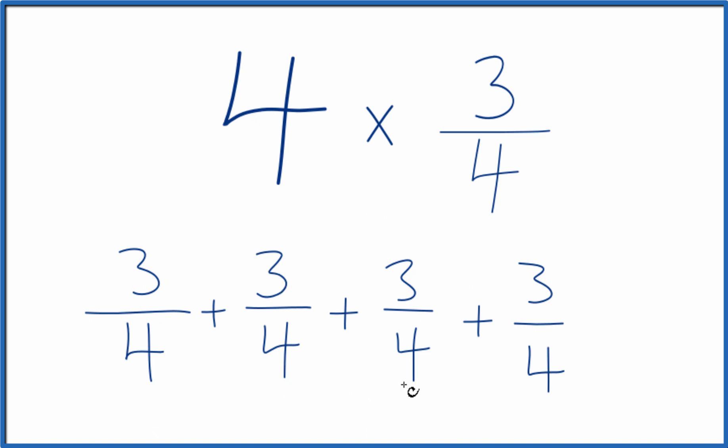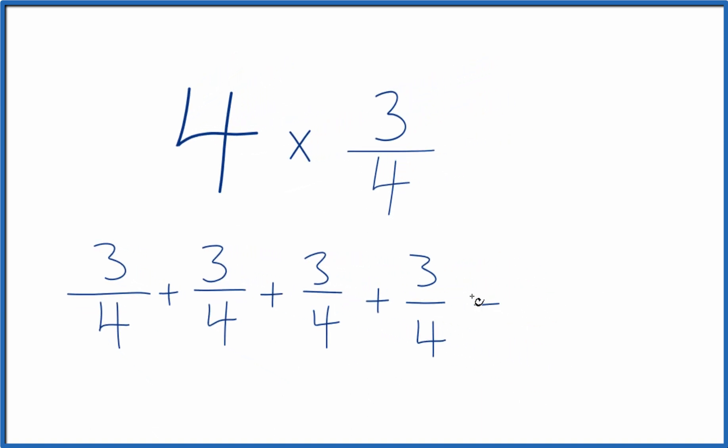So 3 fourths plus 3 fourths plus 3 fourths plus 3 fourths. That's 4 3 fourths. And when we add fractions, the denominator is the same, so we just put it on the bottom here. 3 plus 3 plus 3 plus 3 is 12. So 12 fourths.